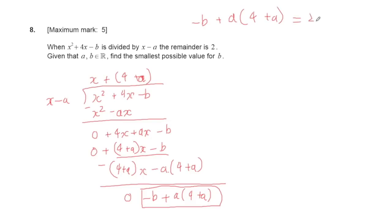Since the remainder equals 2, we have a(4 + a) - 2 = b. Rearranging, we get a² + 4a - 2 = b.